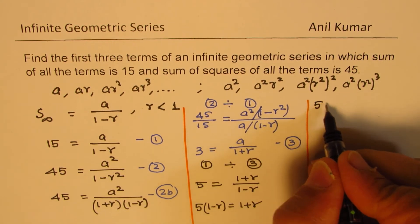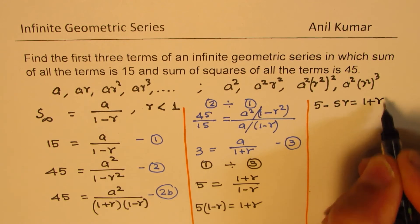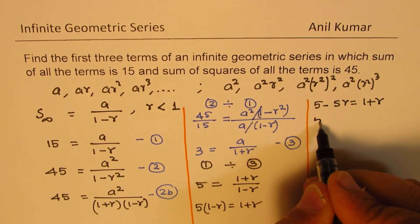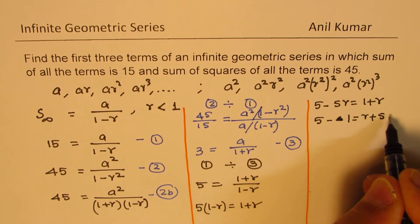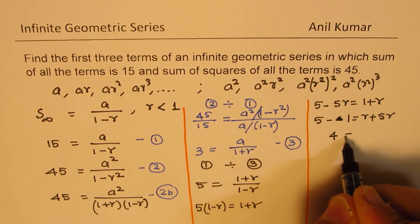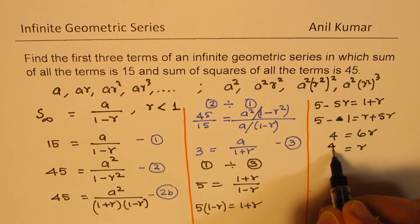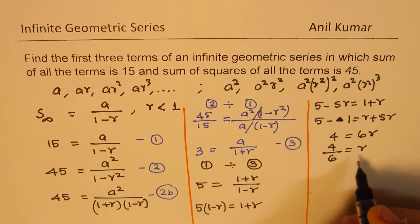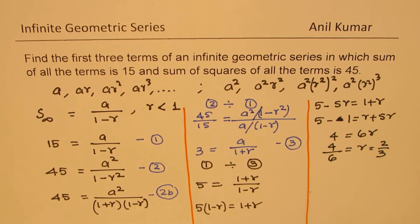So we get 5 minus 5R equals 1 plus R. Taking this on the right side, we get 5 minus 1, which is 4, equals R plus 5R. So 4 equals 6R, or we get R equals 4 over 6, which equals 2 over 3. So we get the value of R as 2 over 3.